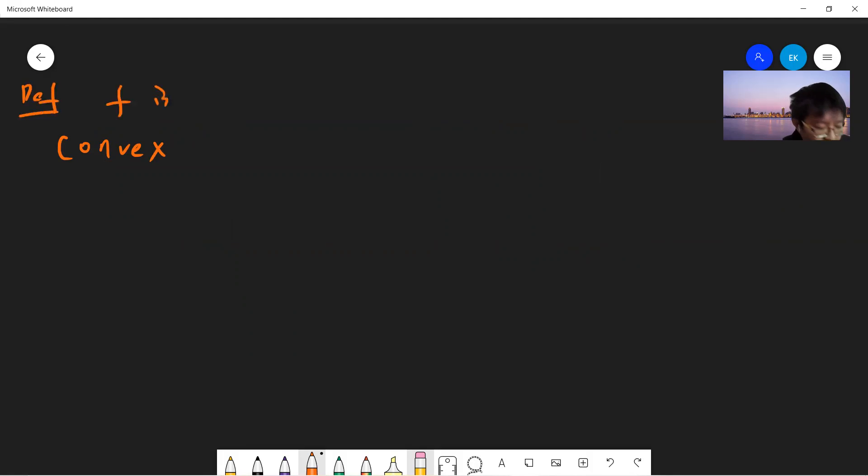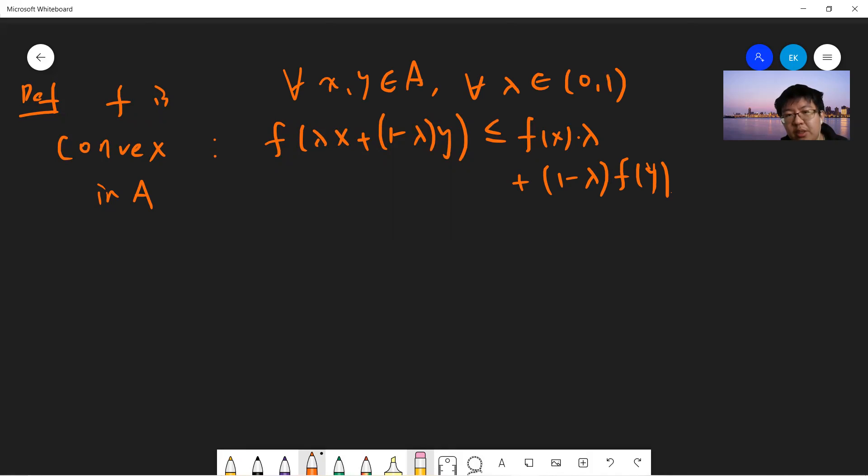Let me give you a recall. So define f is convex means that f of λx + (1-λ)y less or equal to λf(x) + (1-λ)f(y). So basically, when I say f is convex in A, means that for every x, y belongs to A, and for any λ belongs to [0,1], this is satisfied.